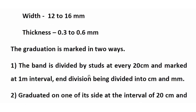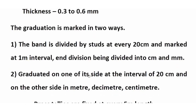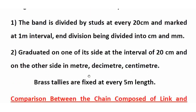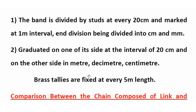The graduations on steel bands are marked in two ways. First, brass studs are provided at 20 cm intervals along the band. Second, markings are made at 1 meter intervals.